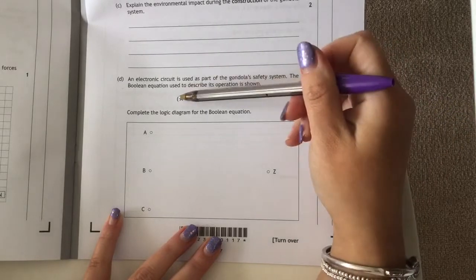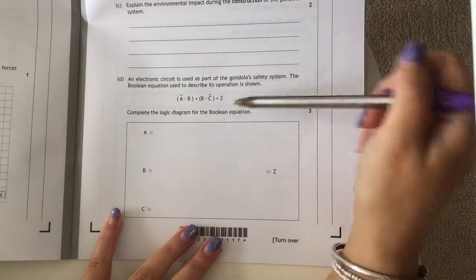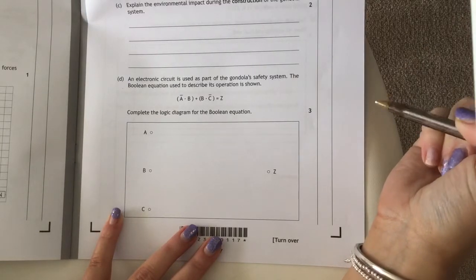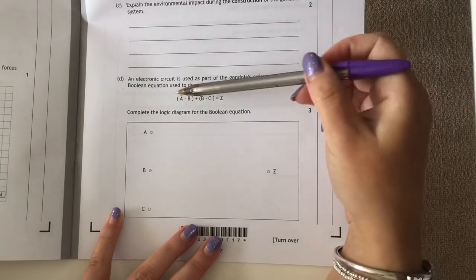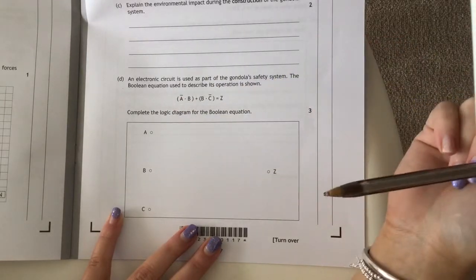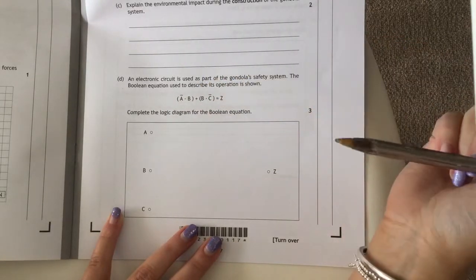So we've got three inputs: A, B, C, and one output Z. We're not interested in working out whether it is high or low. We're looking at how we can represent these gates in a diagram to give us this answer for this equation.